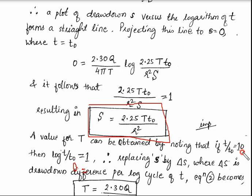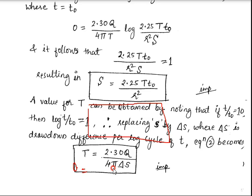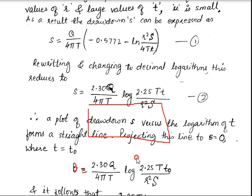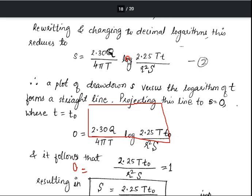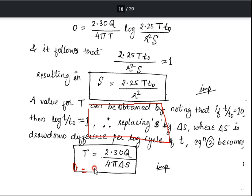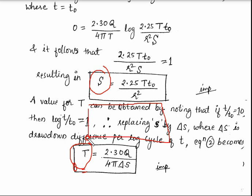A value of T can be obtained by noting that if t/t₀ = 10, then log(t/t₀) = 1. Therefore, replacing s by Δs, where Δs is the drawdown difference per log cycle of t, Equation 2 can be rewritten as: T = 2.30Q / (4π·Δs). Both equations — for S and for T — are given by Cooper and Jacob.